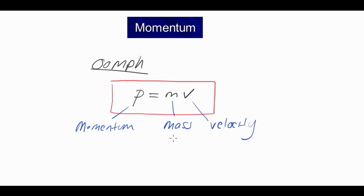And if you look at the units of mass being kilograms and the units of velocity meters per second, that means that the units of momentum must be kilograms times meters per second.